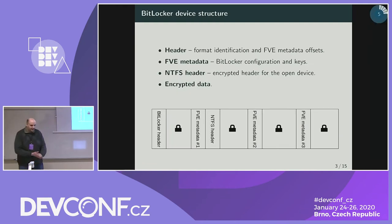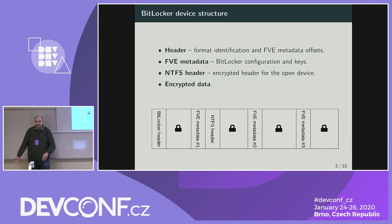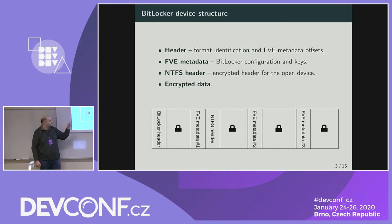Let's take a look at how BitLocker devices actually look. If you create a flash drive in Windows and enable BitLocker on it, the device will have a BitLocker header at the start used to identify the device, with offsets for the metadata. BitLocker metadata is called FVE — Full Volume Encryption Metadata. BitLocker has three identical copies of the metadata in the middle of the drive. You also have an NTFS header of the underlying file system there, encrypted. And of course you have the encrypted data.